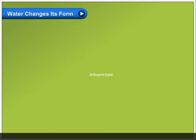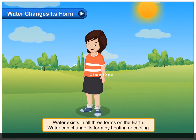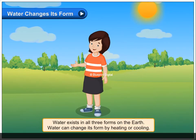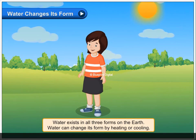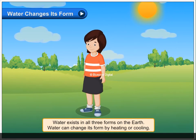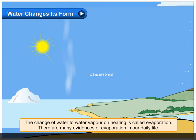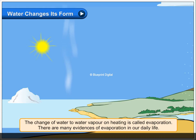Water changes its form. Water exists in all three forms on the earth. Water can change its form by heating or cooling. The change of water to water vapour on heating is called evaporation. There are many evidences of evaporation in our daily life.